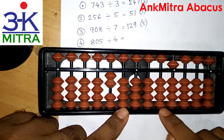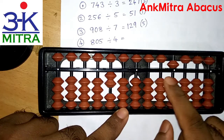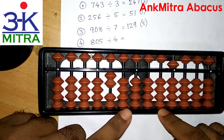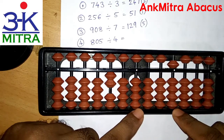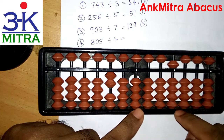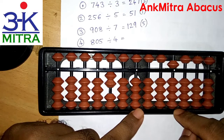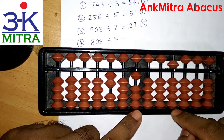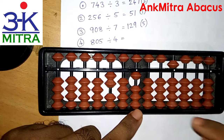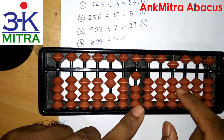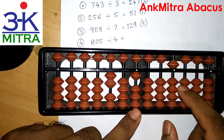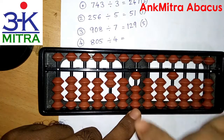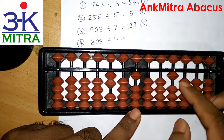Moving one rod to the right, we have nothing — absolutely 0 — on the question set till this rod. Since we have nothing to do on the second rod of the question set, we do nothing on the second rod of the answer set and move one rod further to the right. We have the number 5 on the units place of the question set. Reciting the table of 4, we can subtract just 1 times 4 from this 5. It is very important to use the corresponding rod only — this 5 being on the units place of the question set, we take 1 on the units place of the answer set. 1 times 4 is 4, so we subtract 4. The final answer for 805 divided by 4 is 201 with a remainder of 1.